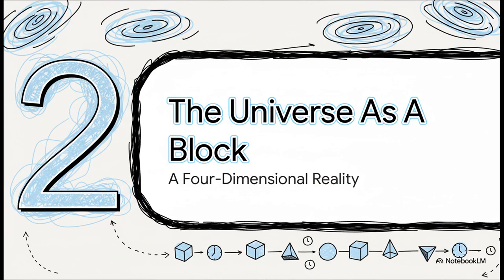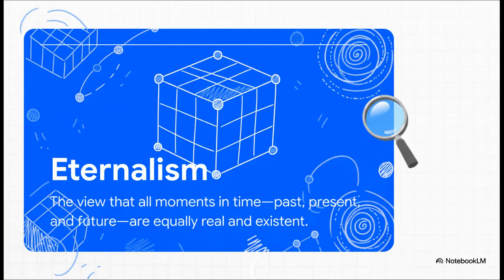So that giant static object we just mentioned? That's it. That's the block universe. This is the absolute core of what we're talking about today. So let's take a minute to really break down what it is and what it means for the reality we think we know. So the whole idea of the block universe is built on this one philosophical concept called eternalism. And it's actually pretty simple to state, but the consequences are just massive. It says that the past, the present, and the future are all equally real.